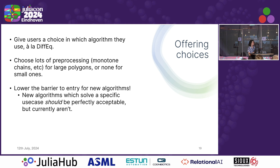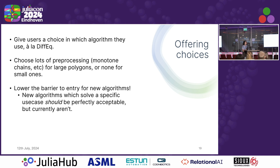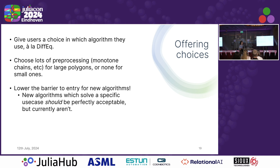So as I said, give users a choice. You can choose lots of preprocessing like what GEOS does, and there is actually an algorithm called GEOS which lets you call into the industry standard GEOS library written in C. You can choose no preprocessing if you want. This lowers the barrier of entry for new algorithms — even if an algorithm doesn't work for everything, if it works for some things, you can still add it.